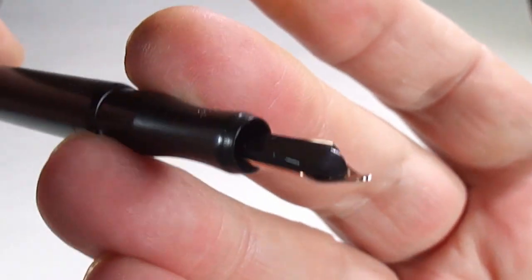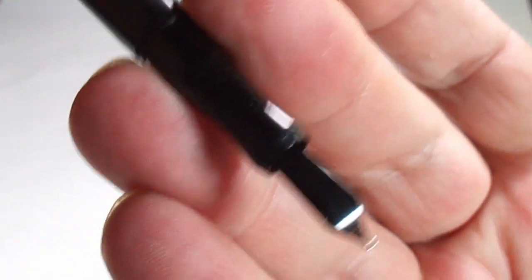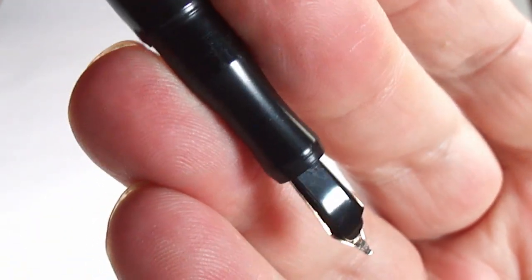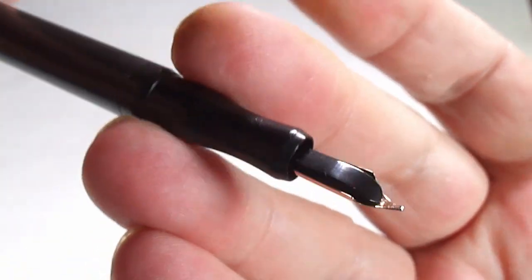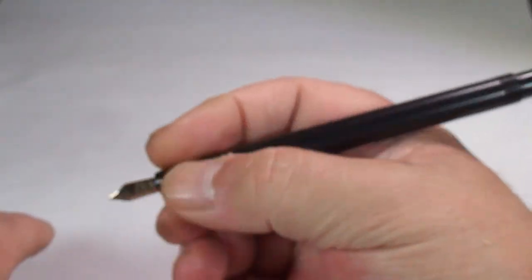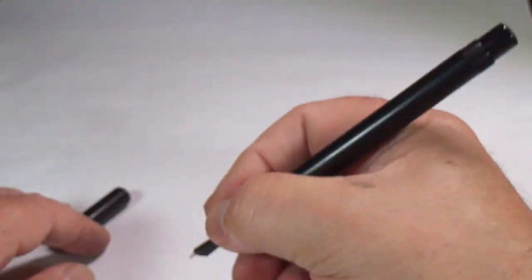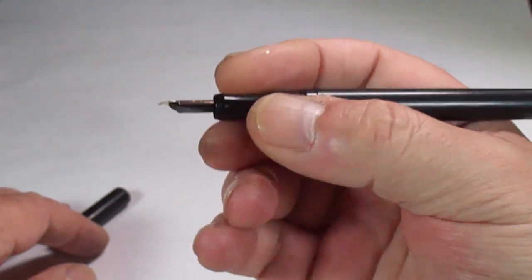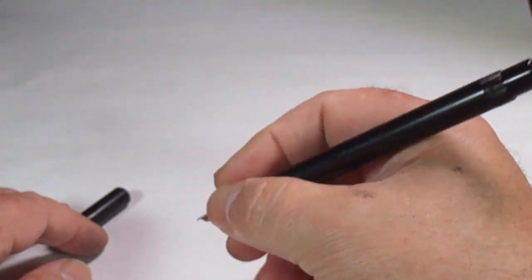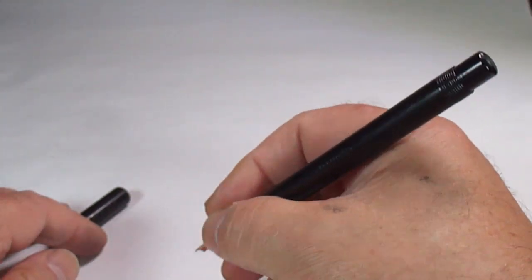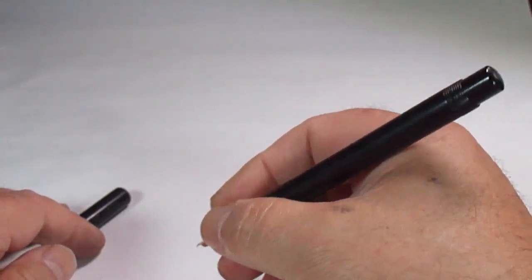It's got a lovely nib, there's a sideways view, there's the feed underneath. Everything as you can see is lovely and clean as it should be. It's a long pen. I've got large hands and although it's a thin pen, this section is actually very comfortable indeed to hold and to write with.